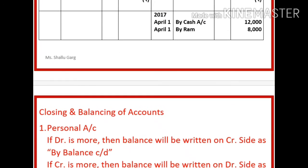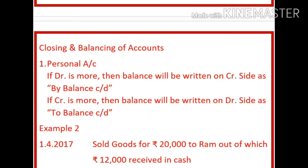After posting, the next step is closing and balancing of the accounts. There are three types of accounts: personal, real, and nominal. In a personal account, at the year-end we find out whether we owe to that person or that person owes to us. If the debit of any account is more, the balance will be written on the credit side as 'by balance carried down' — only for the purpose of balancing — and that person is our debtor. If the credit side is more, the balancing figure will be written on the debit side, representing a credit balance.